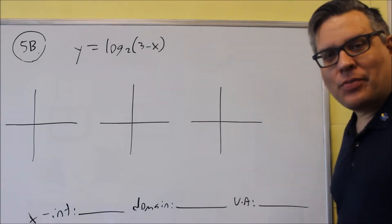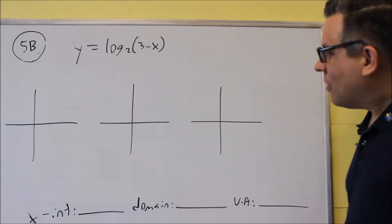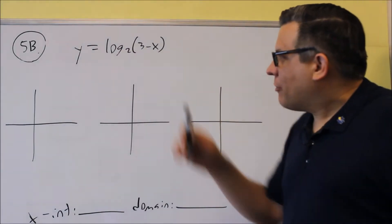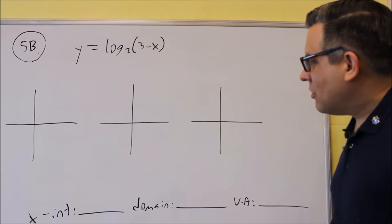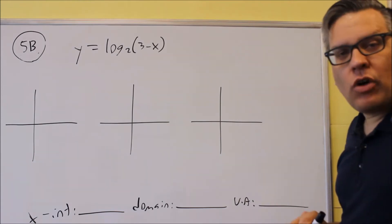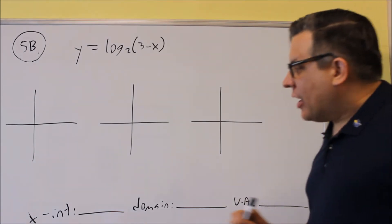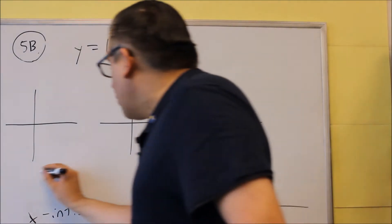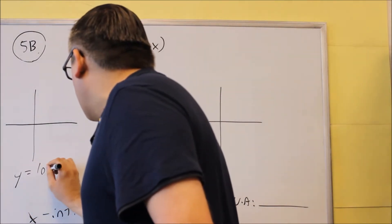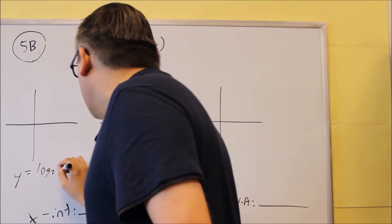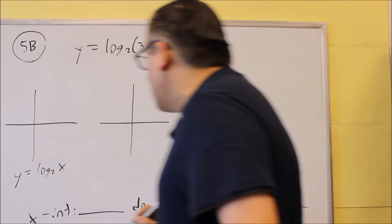Okay, next is 5b. We have log base 2 of 3 minus x. It says they want you to start by drawing in the base graph, which is y equals log base 2 of x.